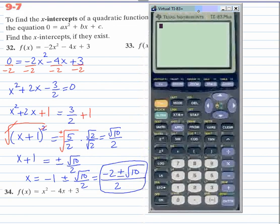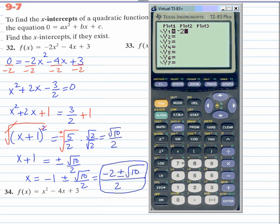We're going to graph the function. Press y equals and put negative 2x squared minus 4x plus 3, and press graph. These are our 2 x-intercepts here and here. This number is our negative 2 plus radical 10 all over 2, and this x-intercept is negative 2 minus radical 10 all over 2.